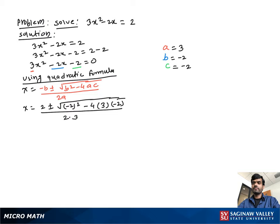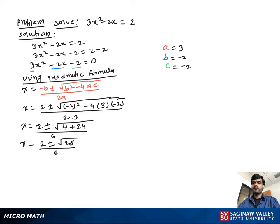Then we get x equal to 2 plus or minus square root of: negative 2 squared is positive 4, and negative times negative will be positive, and 4 times 3 times 2 equals 24, over 2 times 3 is 6. So x equal to 2 plus or minus square root of 28 over 6. We can also write square root of 28 as 2 times square root of 7, over 6.